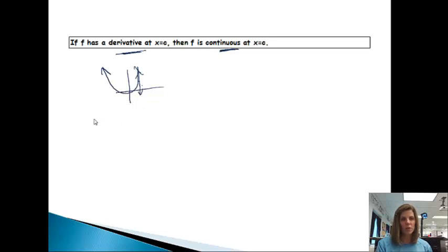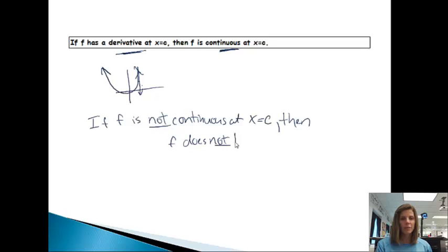And this is probably the one that we use most. The contrapositive is if f is not continuous at x equals c. And remember, c is just x equals 3, x equals 6, whatever. Then f does not have a derivative.